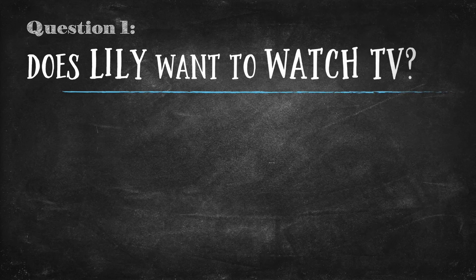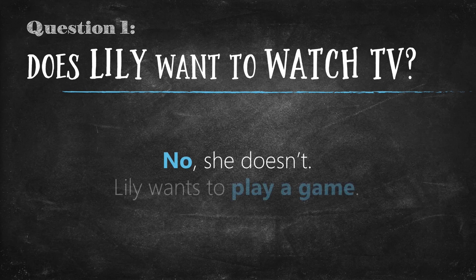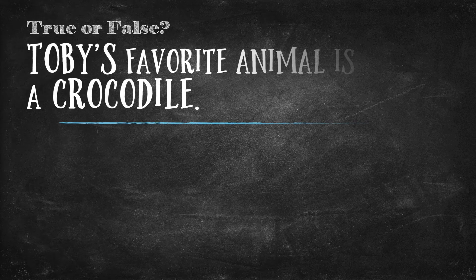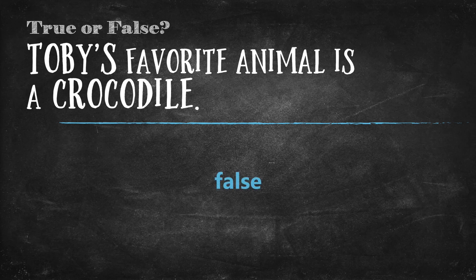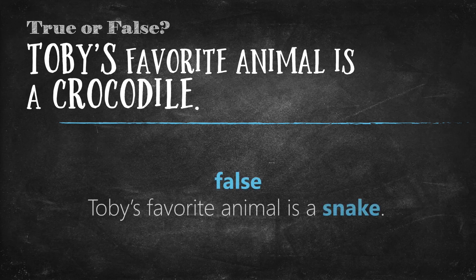Let's answer a few quick questions. Question 1: Does Lily want to watch TV? The answer is no, she doesn't. Lily wants to play a game. Great job. Here is question 2, true or false: Toby's favourite animal is a crocodile. The answer is false. Toby's favourite animal is a snake.